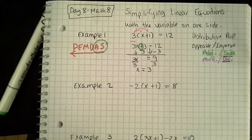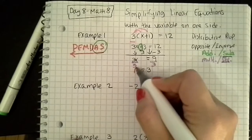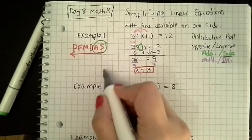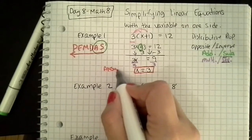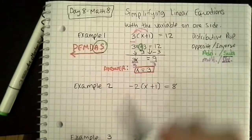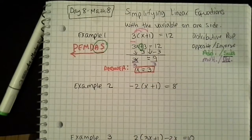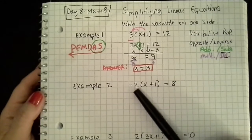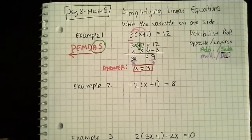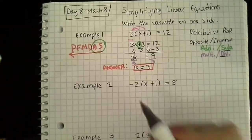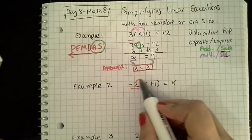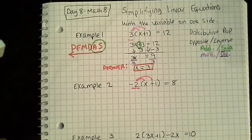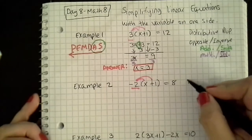Okay, so here's my answer and I like to box it in. In our next example, we have negative 2 times x plus 1. So I'm going to go ahead and use the multiplier, which is my negative 2, and that means multiply that inside each term. And what I'm using is the distributive property.